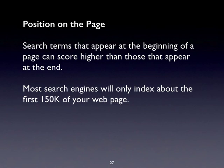Search terms that appear at the beginning of the page can score higher than those further down. If you have 'ice cream recipes' at the top of the page, and another page with the same content has it at the bottom, the one with it higher up scores higher. The one at the bottom might not score at all — the search engine may have finished indexing before it even got to those words.